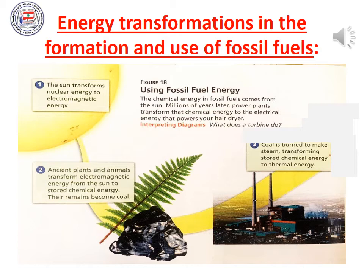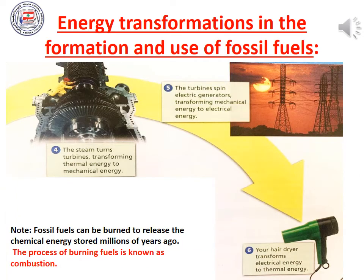When these ancient plants and animals died, their remains were covered by layers of sand, silt, and water, and because of the high pressure and temperature they turned into fossil fuels — in this example, specifically coal. In the third step, coal is burned to make steam, which transforms chemical energy to thermal energy. In the fourth step, steam turns turbines, transforming thermal energy to mechanical energy. So when coal is burned, chemical energy is transformed into thermal energy, and this thermal energy is then transformed into mechanical energy when the steam turns turbines, which are like big fans.